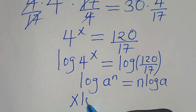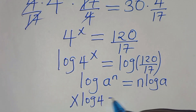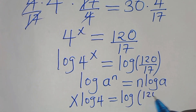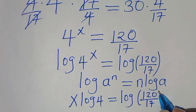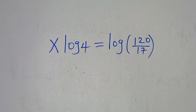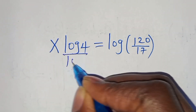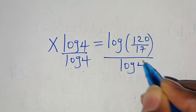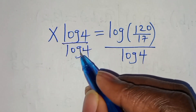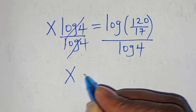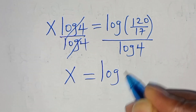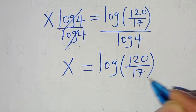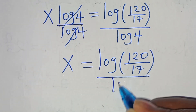We then divide both sides by log 4. Log 4 over log 4 simplifies, so x equals log(120 over 17) divided by log 4.